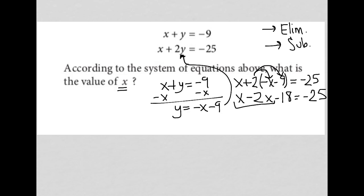Further simplification, combining like terms, I have negative x minus 18 equals negative 25. Add 18 to both sides, and I get negative x equals negative 7.